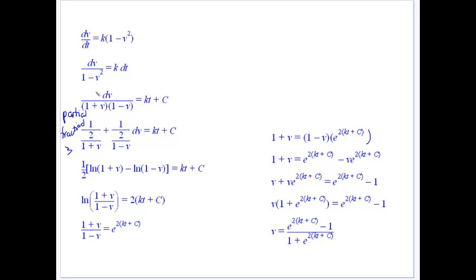So we haven't shown the partial fractions, but it comes up with a half as the numerators on both of those, which works out nicely because that just integrates to a half out the front of natural log of 1 plus v. And this one is minus natural log of 1 minus v. So there's our integrals done at this point.